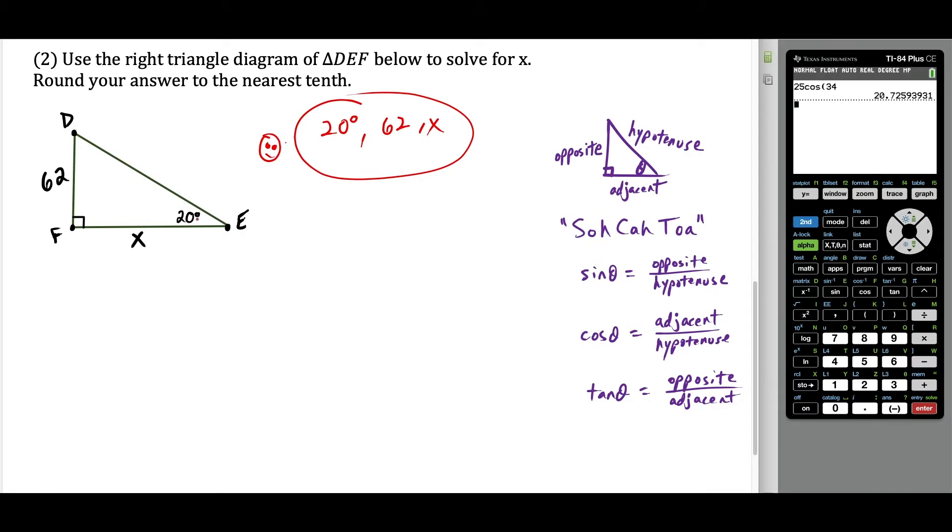And if we're using this 20 degree angle, the side that's 62 units long is opposite of this 20 degree angle here. So this represents the opposite side, x is the side adjacent to the 20 degree angle. And the hypotenuse here is not labeled, but we don't care about the value or the length of the hypotenuse. What we're trying to find here is x.